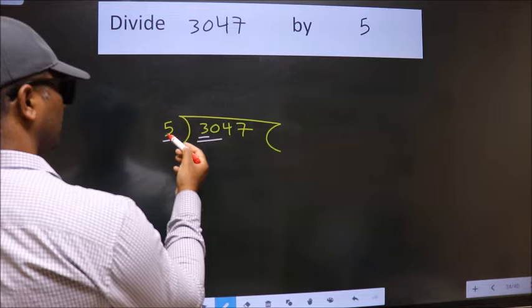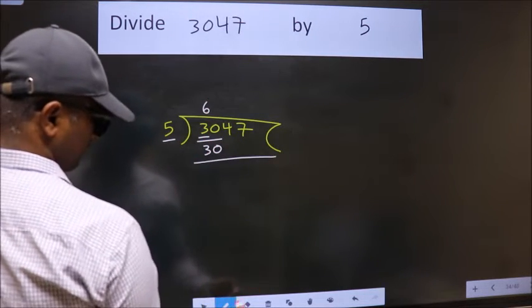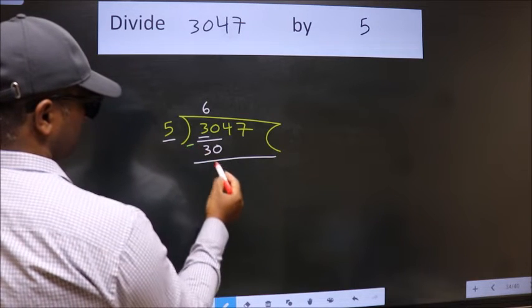When do we get 30 in 5 table? 5, 6, 30. Now, we should subtract. We get 0.